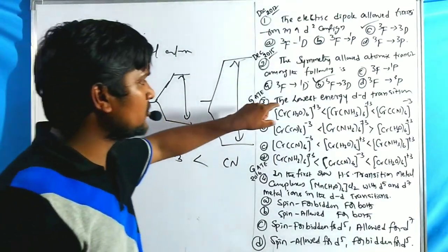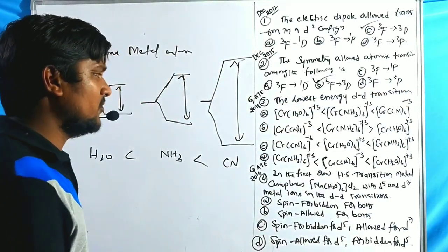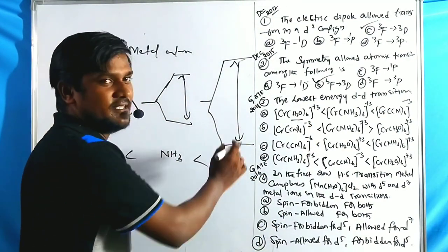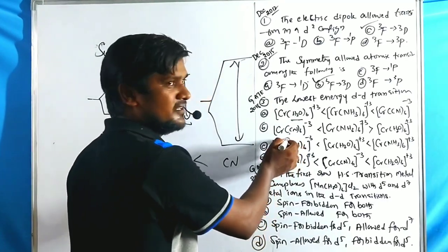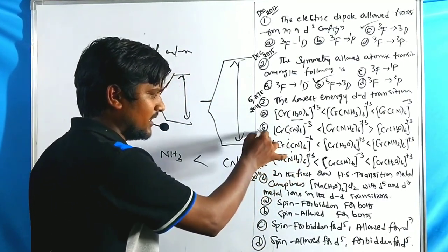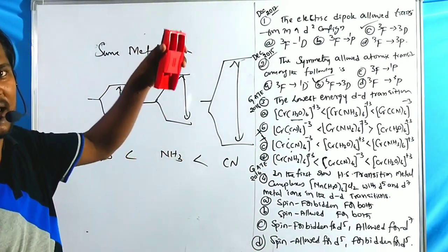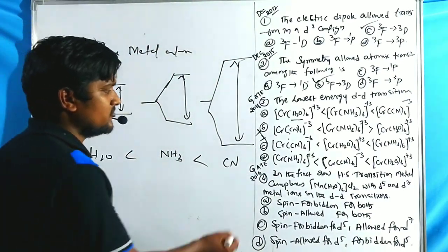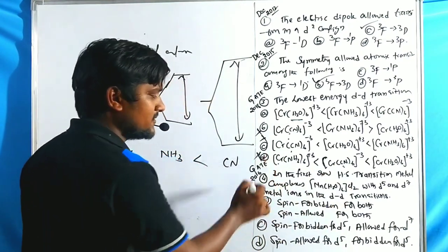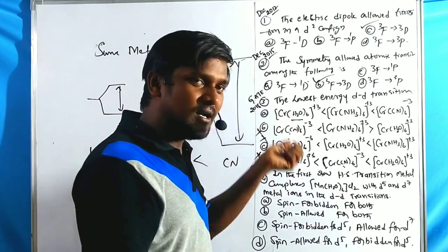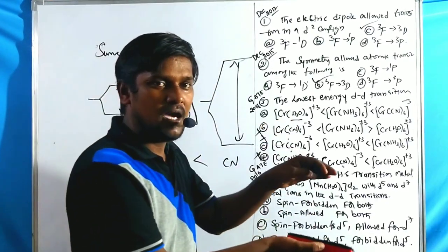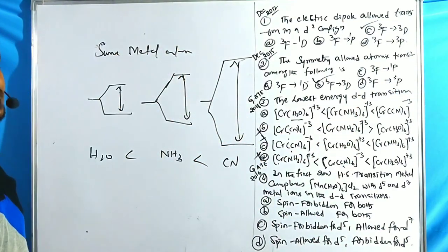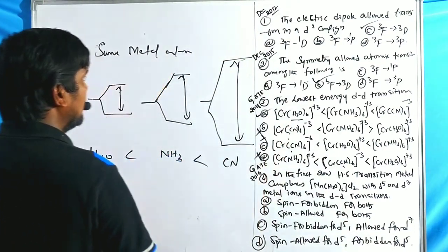If the crystal field splitting energy gap is larger, more energy is required for the d-d transition — meaning it is not the lowest energy. Cyanide requires the most energy; water requires the least. Therefore the lowest energy d-d transition occurs in the water complex, followed by ammonia, then cyanide. Option A is correct.